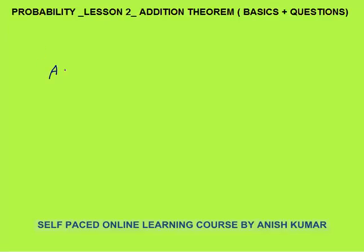Let's say set A is there. A set is a collection of elements. Set A has elements 1, 2, 3, 4 — so 4 elements are there. Set B has elements 3, 4, 5, 6 — again 4 elements are there.